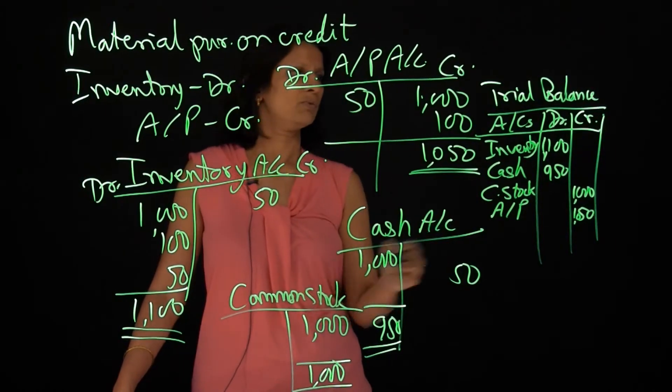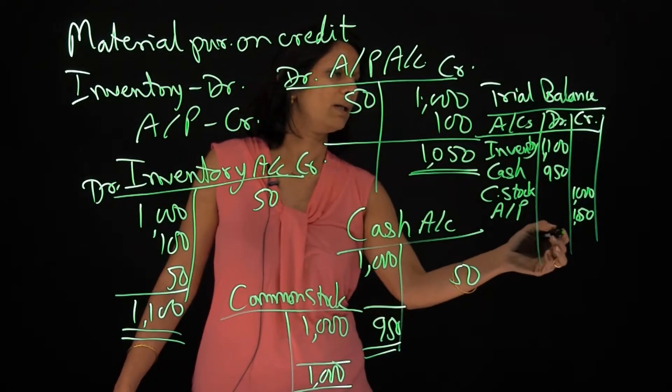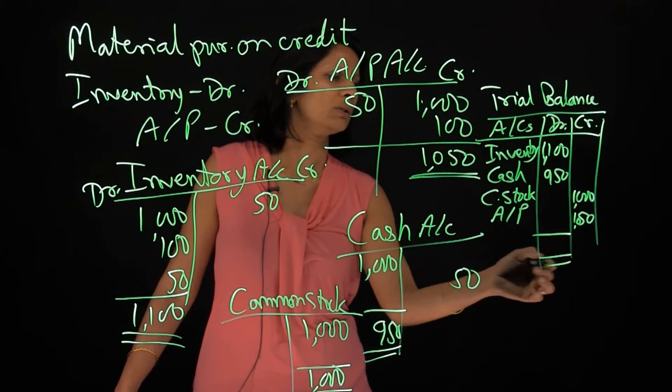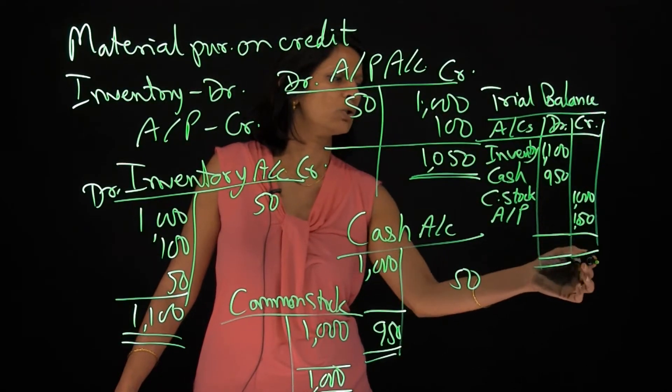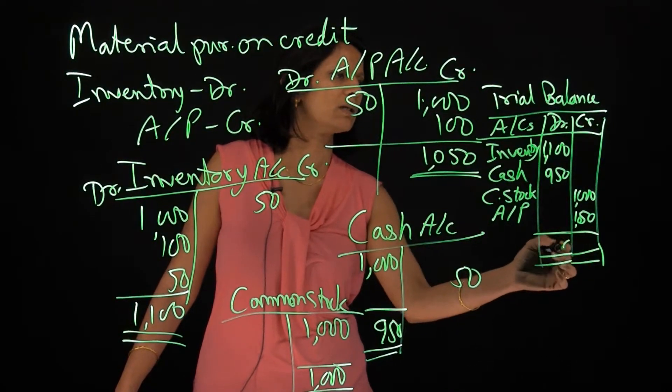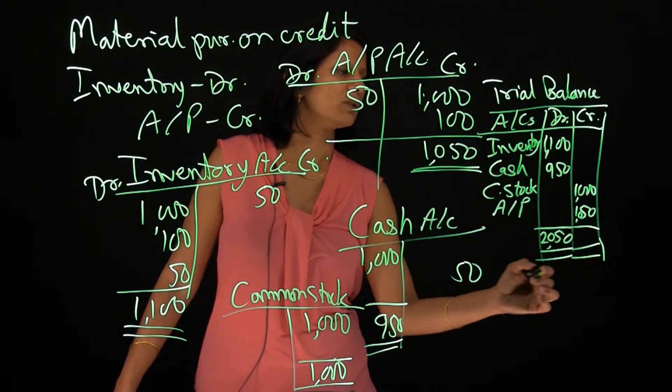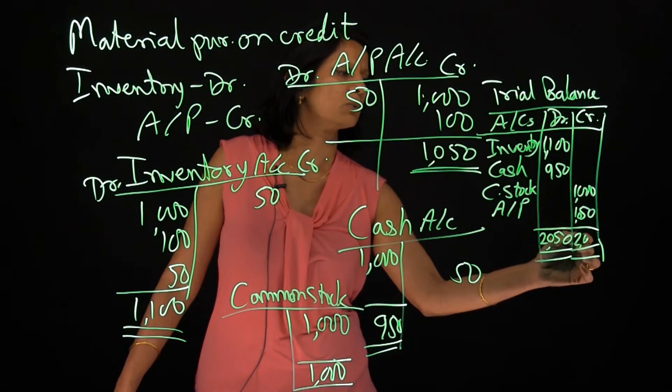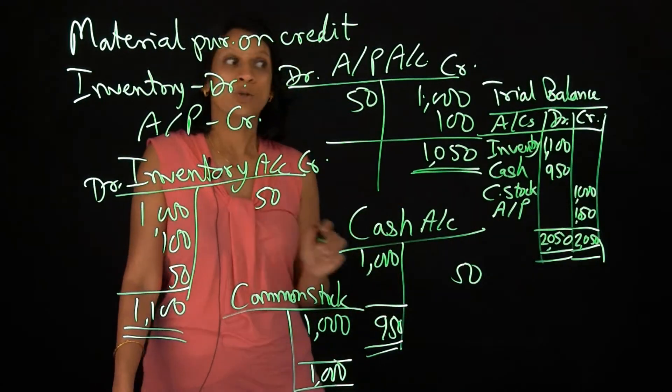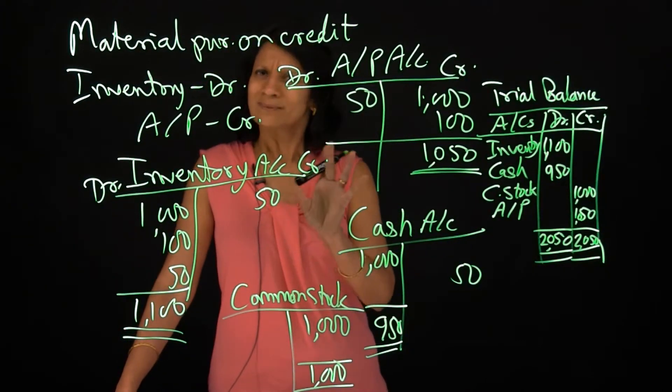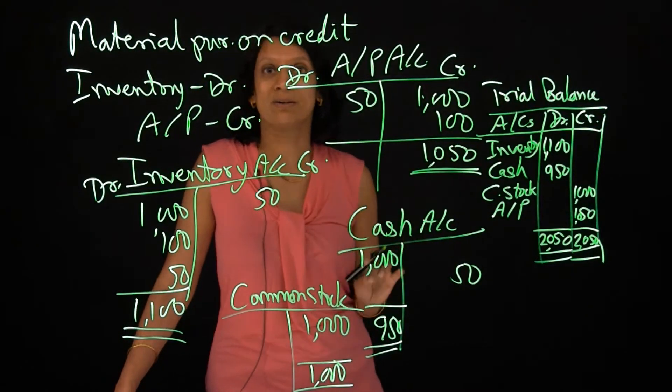And that's it. One, two, three, and four. So when I go ahead and close or rather make a total of all my debits and credits, $2,050 on the debit side and similarly $2,050 on the credit side.